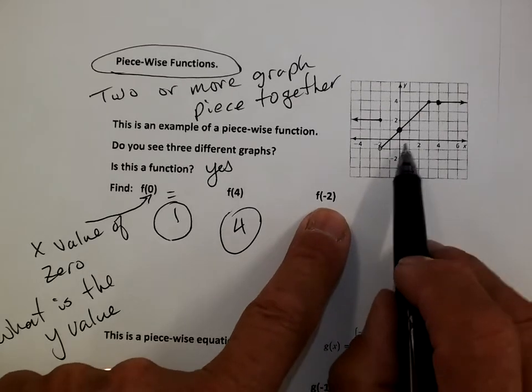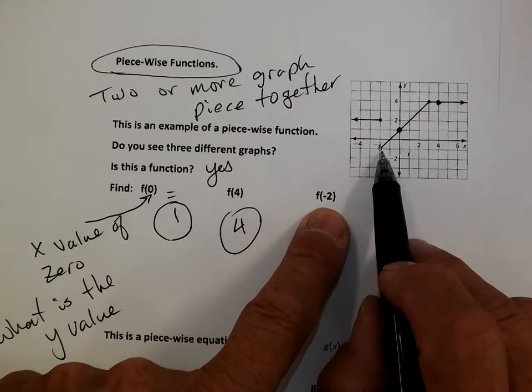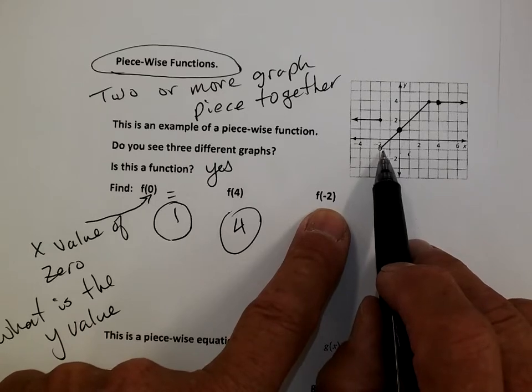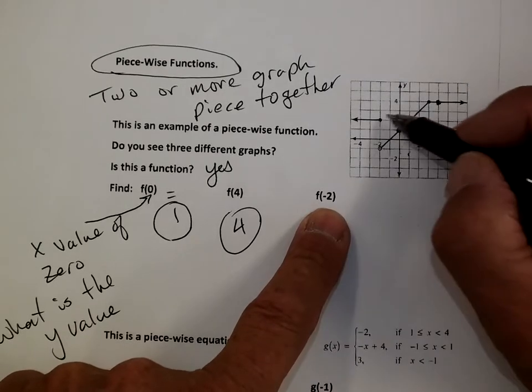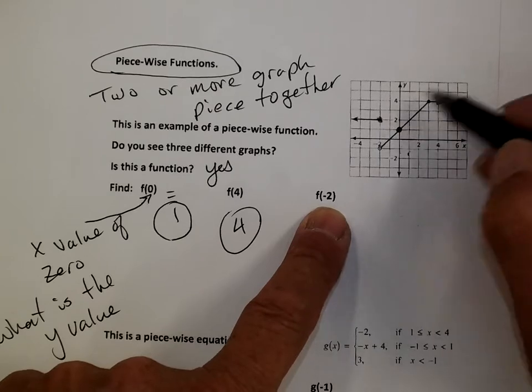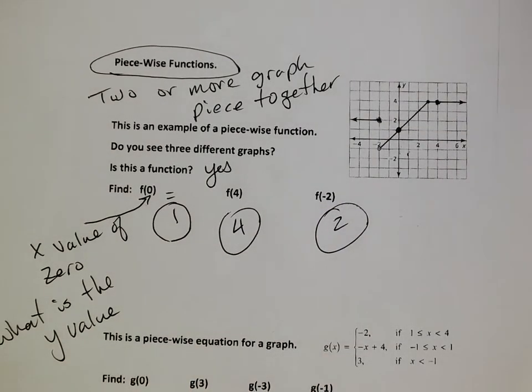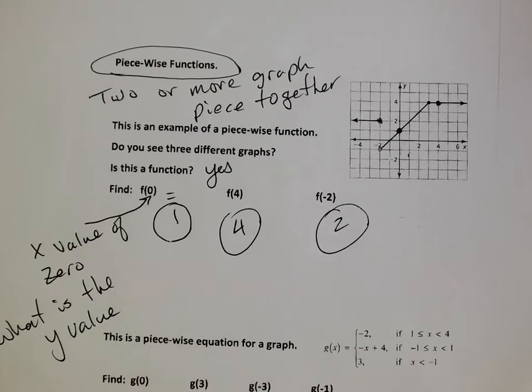F of negative two. So go x value. X value of negative two. Go one. Two. Negative two. Now, here it is. But that's an open circle. That's an open circle. So it doesn't count. So we pop up to here. And there's its answer. At positive two. It's a little tricky. But that's how it works. You want that particular y value.